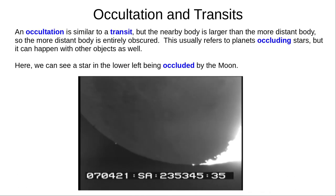Transits occur when the nearby body appears smaller in the sky than the more distant body. But when the nearby body appears larger, it can occlude the more distant body, block it out entirely. We usually talk about planets occluding stars, but in this video we can see the Moon occluding a star in the lower left.